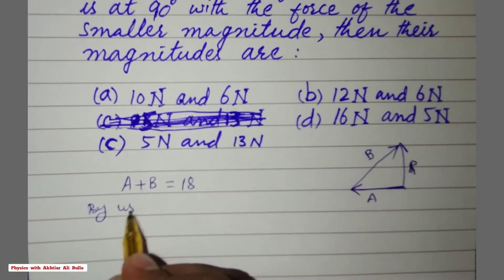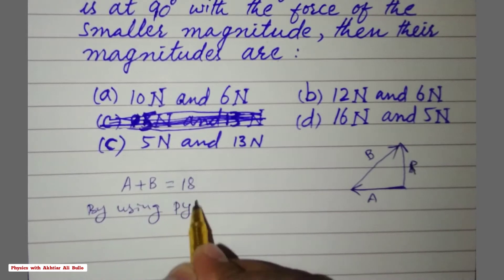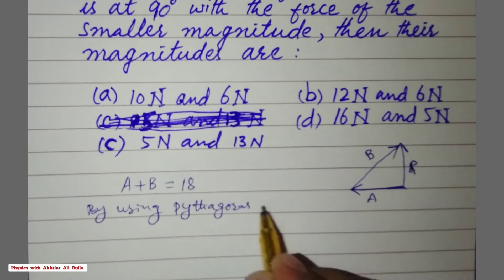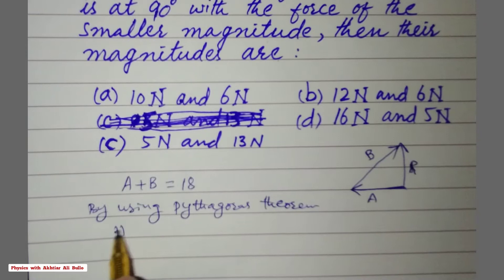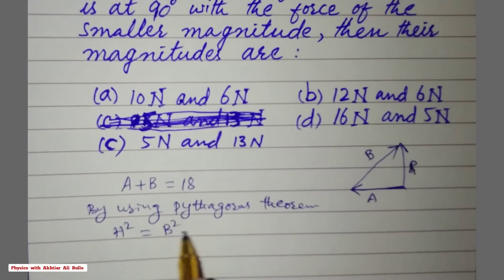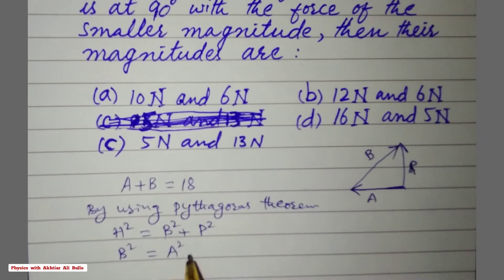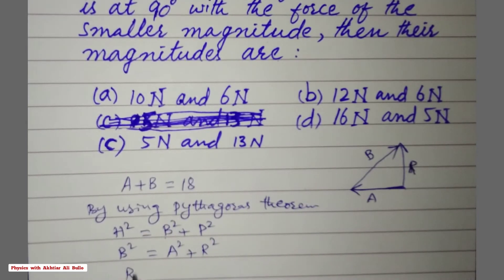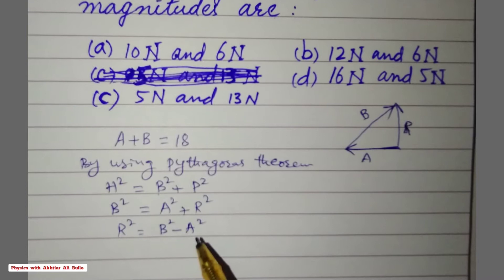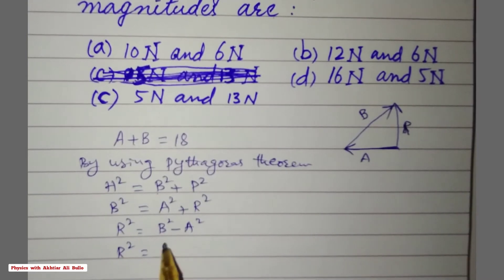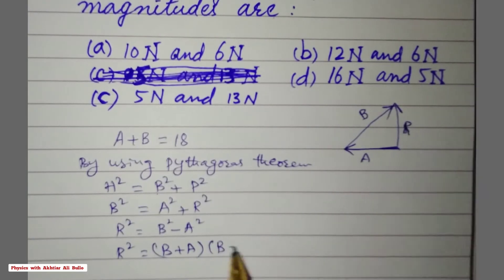By using the Pythagorean theorem: hypotenuse² = base² + perpendicular². Here the hypotenuse is B, so B² = A² + R². Therefore R² = B² − A², which factors as R² = (B + A)(B − A).